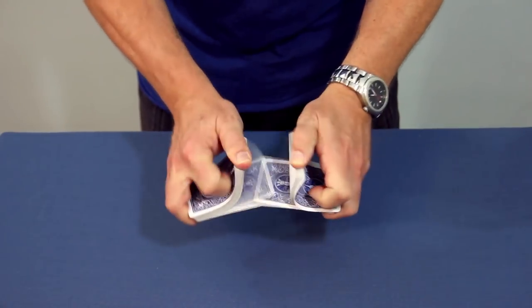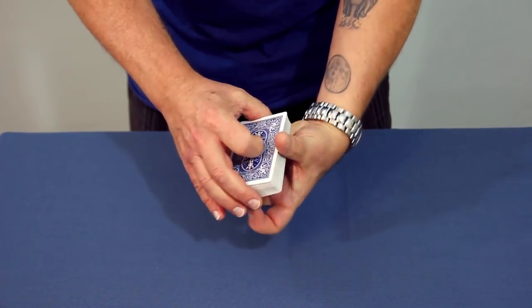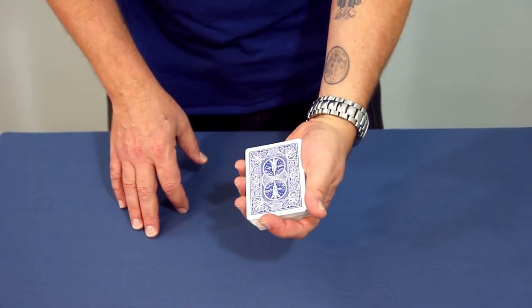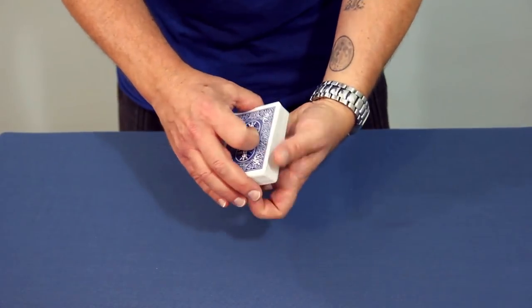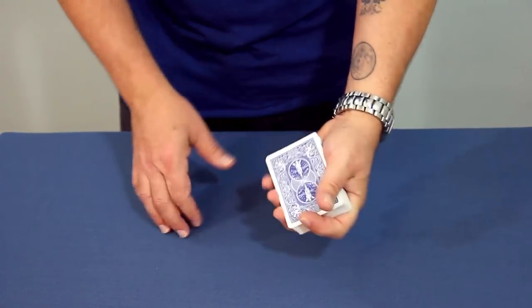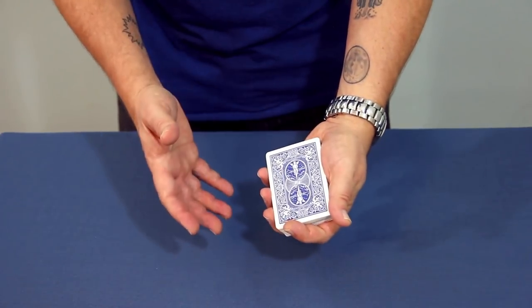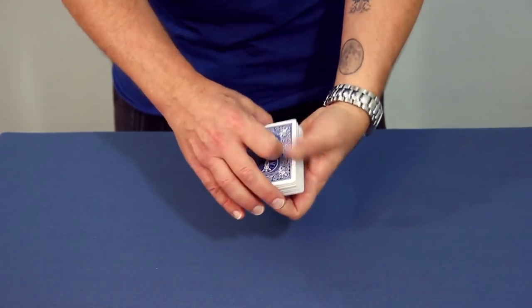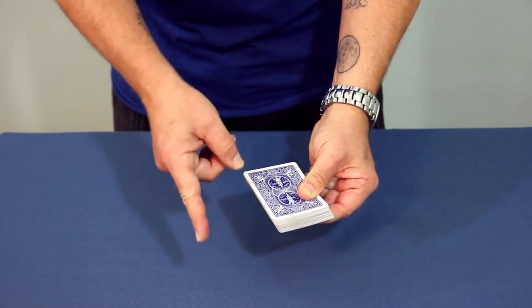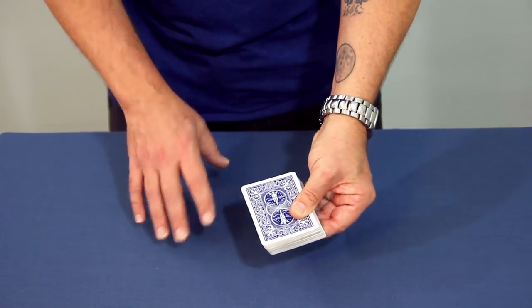The next double lift I want to look at is another one I use a lot, and it's called the strike double. The way the strike double looks is it looks like you just come over and turn over a card. And what makes the strike double unique is that there is no get ready. So you might be wondering, well if there's no get ready, if there's no gap between the top two cards, how do you make sure you get the top two cards every time? Not three, not one, but two. And the word is, it sounds like a punchline, practice.